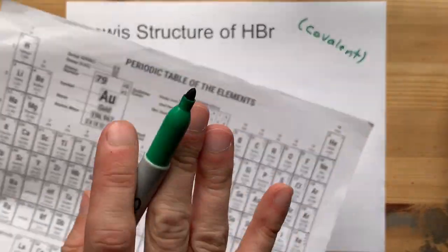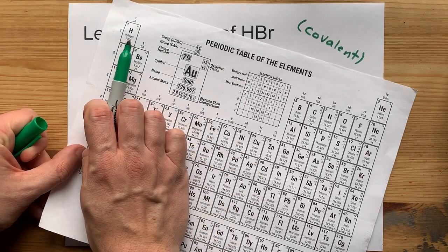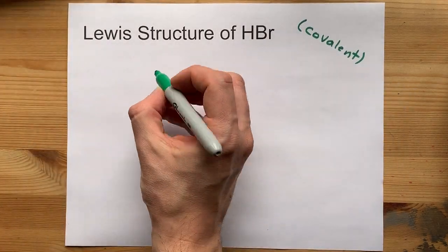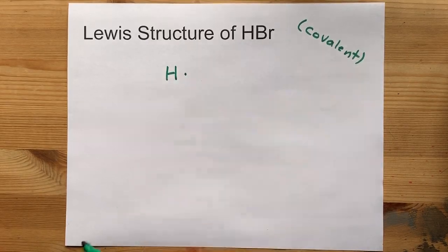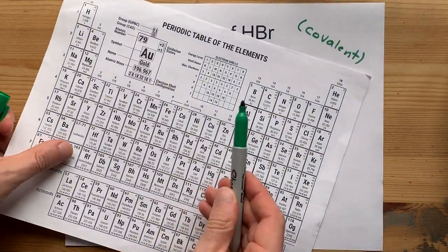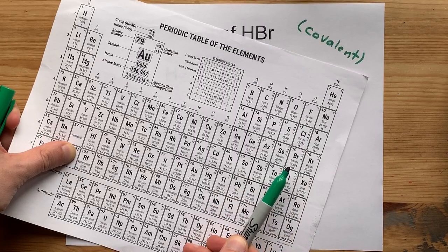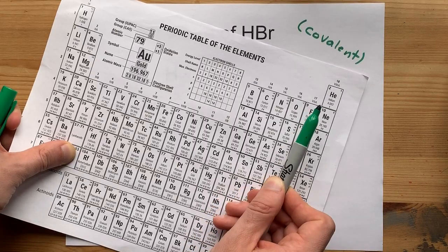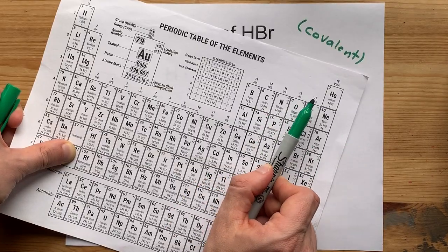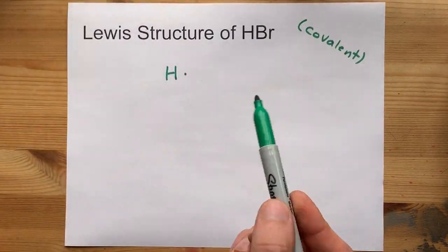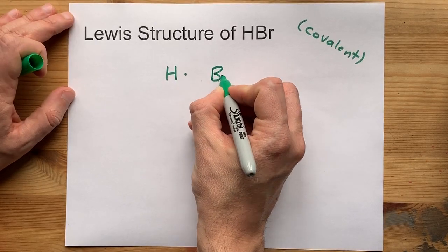Now, let's see what their structures are like as atoms. Hydrogen is in column one, so it brings one valence electron with it. I'm going to put a dot there. Bromine is in column 17. So, bromine,